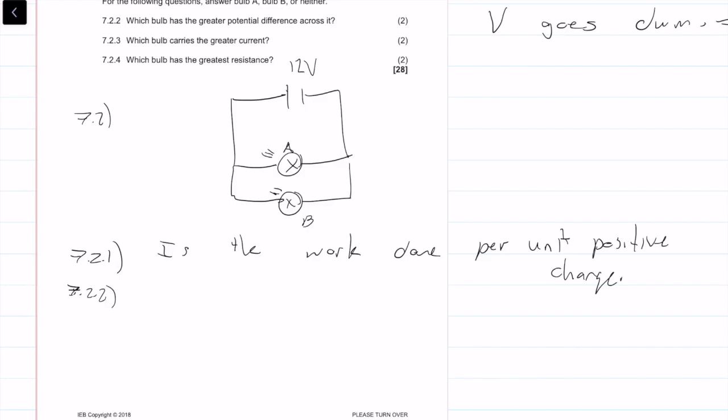7.2 point 2: which bulb has the greater potential difference across it? If we connected a voltmeter, both of these are in parallel, therefore, they are the same. So neither. They would have exactly the same voltage across it, which would be the 12 volts if there's no internal resistance.